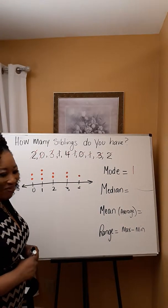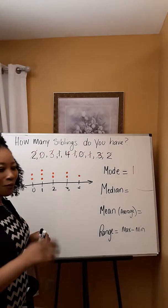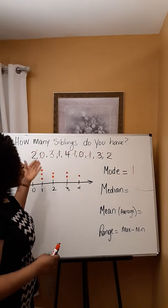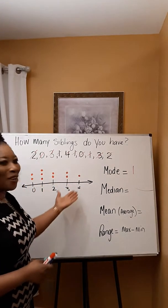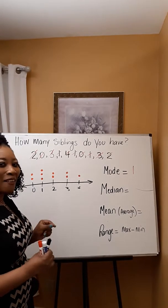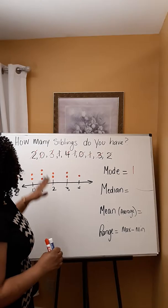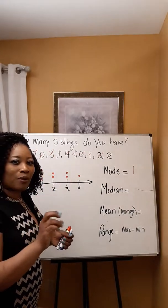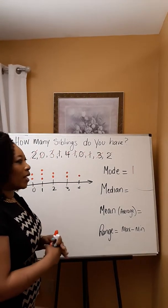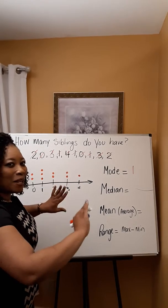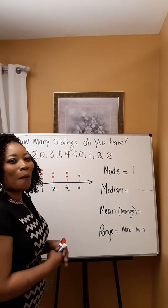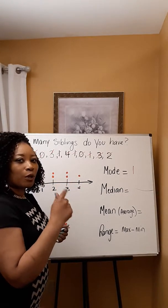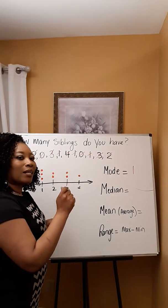Now let's find the median. The median is the most fun because in a dot plot, you don't have to order the numbers from least to greatest — it's already done for you. All you have to do is identify the numbers in the middle. Because 10 students were surveyed, there are going to be two numbers in the middle. So I take those 10 dots and divide them in half, which gives me five numbers to the right and five to the left.